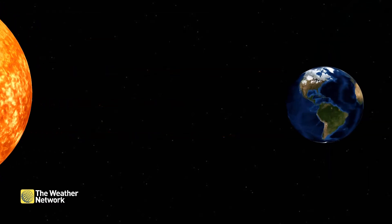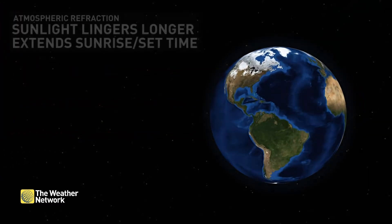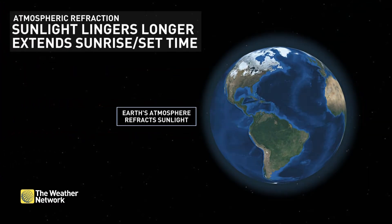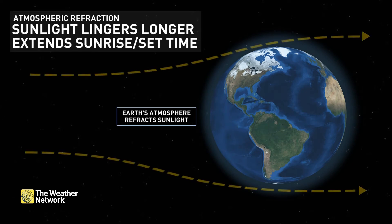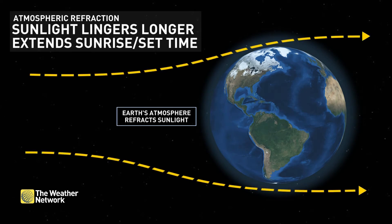The reason why it doesn't exactly work out is because of something called atmospheric refraction. As the sun's light moves through our atmosphere, it gets bent or refracted, making the sun appear in the sky even when it is well below the horizon. This leads to a few more minutes of daylight on the day of the equinox.